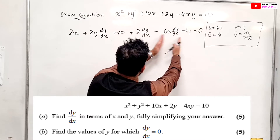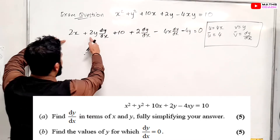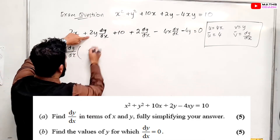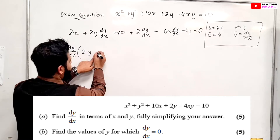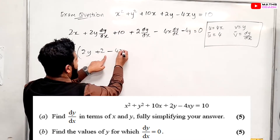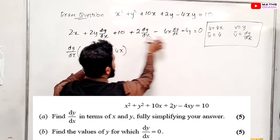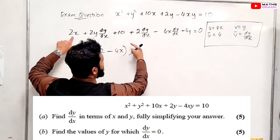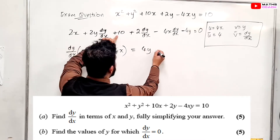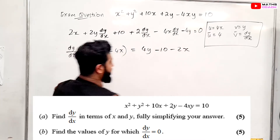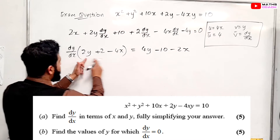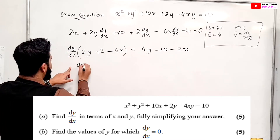We want to keep dy/dx on one side and send everything else over. Factorizing out dy/dx, we get (2y + 2 - 4x)·(dy/dx). The 10 and the minus 4y shift to the other side, giving us 4y minus 10 minus 2x. You could also write it as 4y minus 2x minus 10.